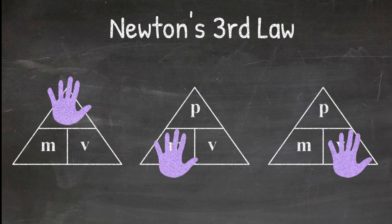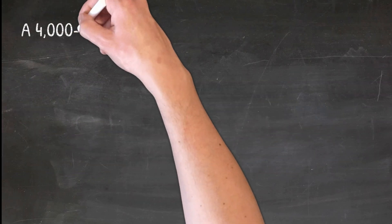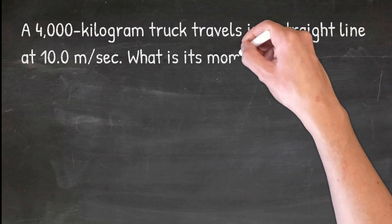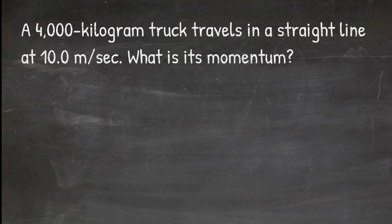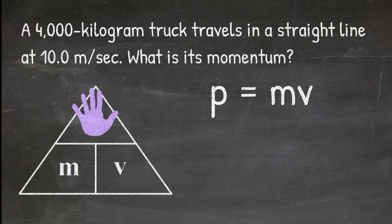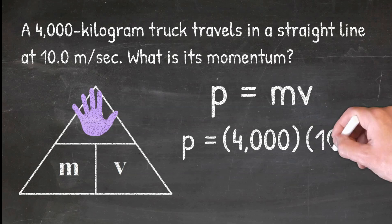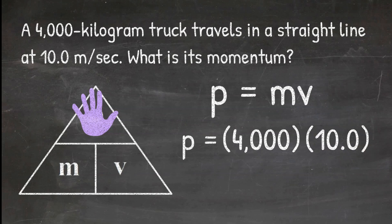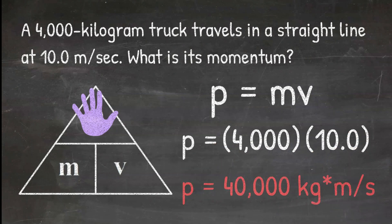Now let's look at some practice problems. In our first example, the question says: a 4,000-kilogram truck travels in a straight line at 10 meters per second. What is the momentum? I cover up the letter p in my triangle, which tells me to multiply mass times velocity. So p equals mv: I plug in 4,000 kilograms and 10 meters per second, and 4,000 times 10 gives me a final answer of 40,000 kilograms times meters per second.